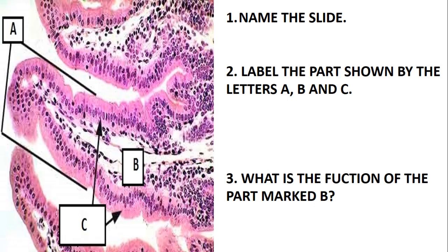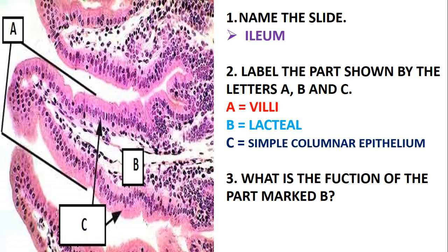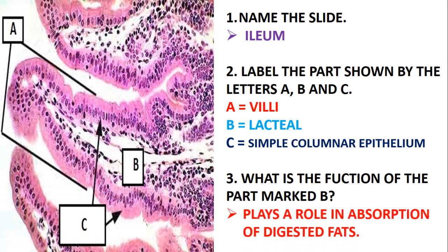Name these slides. This is coming from the intestinal part — this is just the ileum. Label the parts shown by the letters A, B, and C. A is just a villus. B is the inside area, which is just the lacteal, playing a role in absorption of fats. C is just simple columnar epithelium. We need to understand that from the stomach up to the large intestine you find simple columnar epithelium.